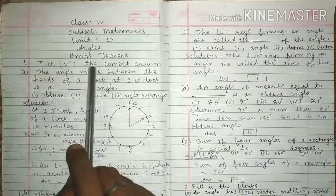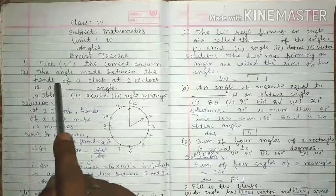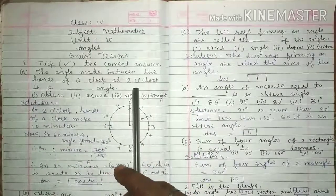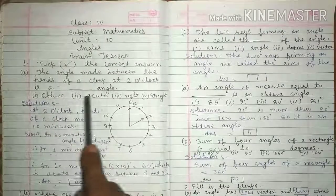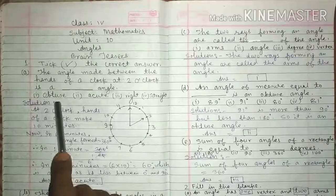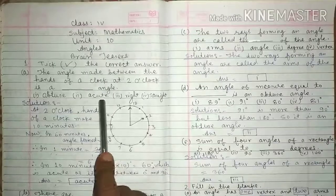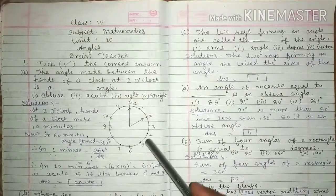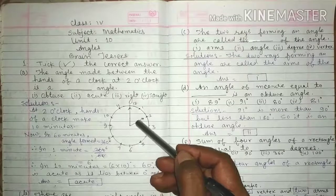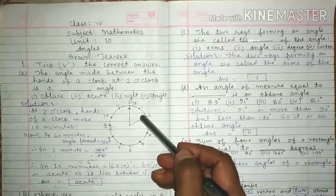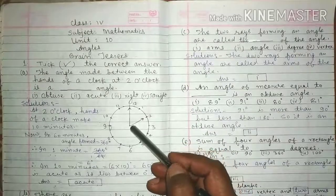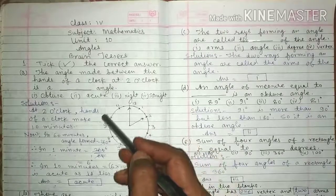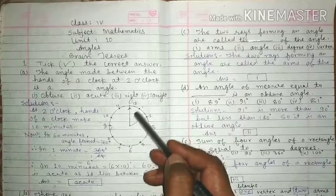Q1. Tick the correct answer. A. The angle made between the hands of a clock at 2 o'clock is: What angles? 1. obtuse, 2. acute, 3. right, 4. straight. At 2 o'clock, the hour hand is in front of 2 and minute hand is in front of 12. So at 2 o'clock, the position of hands of a clock is this.